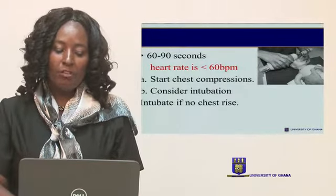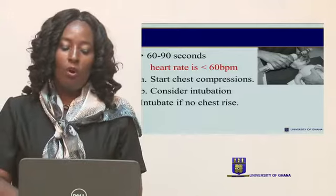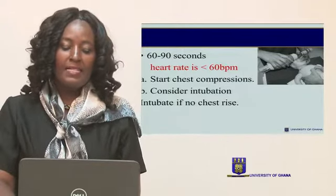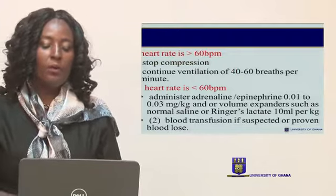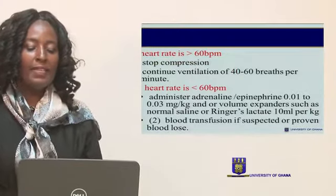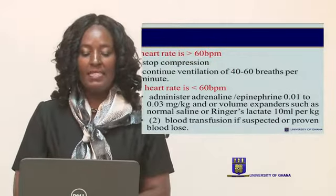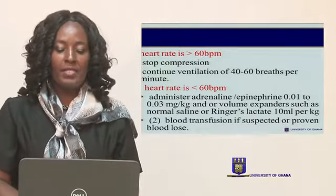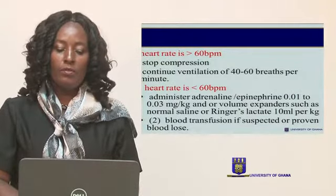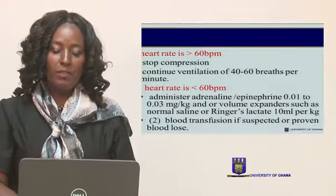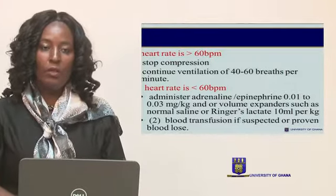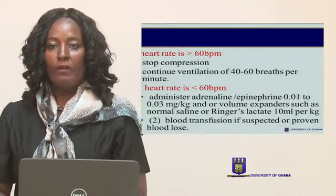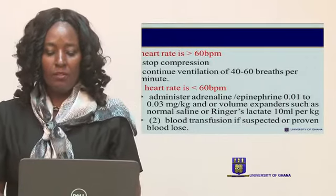If the heart rate is less than 60, there is a need for chest compressions. Consider intubation if the chest is not rising. When the heart rate is more than 60, stop chest compressions. The compression-to-breath ratio is: one, two, three — breathe; one, two, three — breathe. So for every three compressions you allow for one breath.